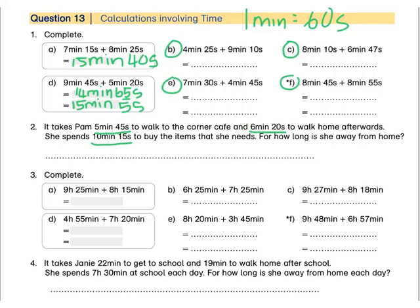We need to add up all three of these times. I'm going to look at what I've underlined. We have 5 minutes plus 6 minutes, which gives us 11 minutes, plus another 10 minutes will give us 21 minutes. Then when we add up our seconds, I'm going to add 45 plus 15 first because that gives us 60, and 60 plus 20 will give us 80 seconds.